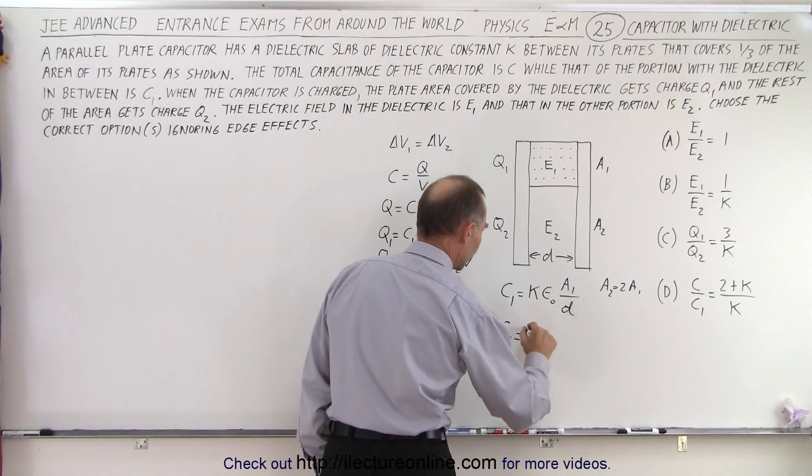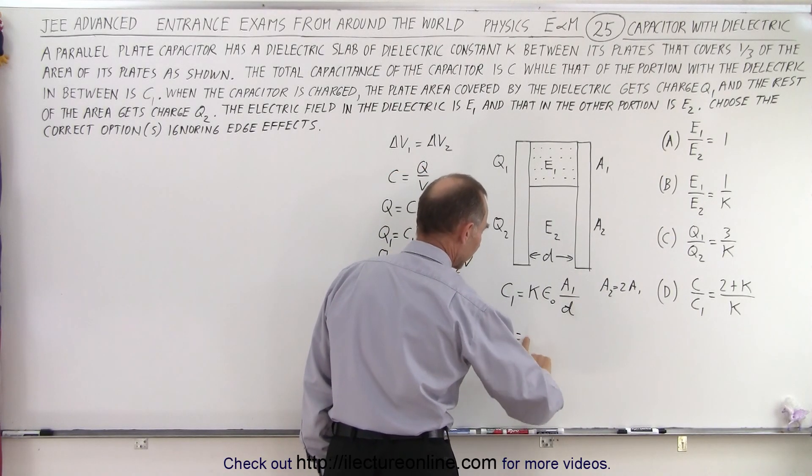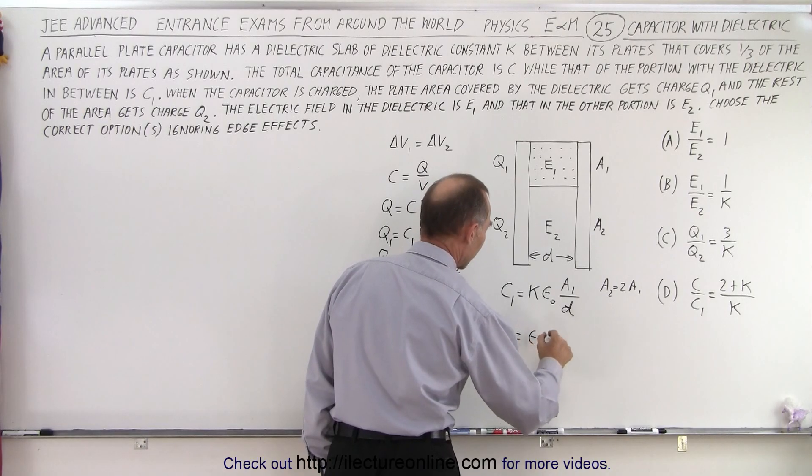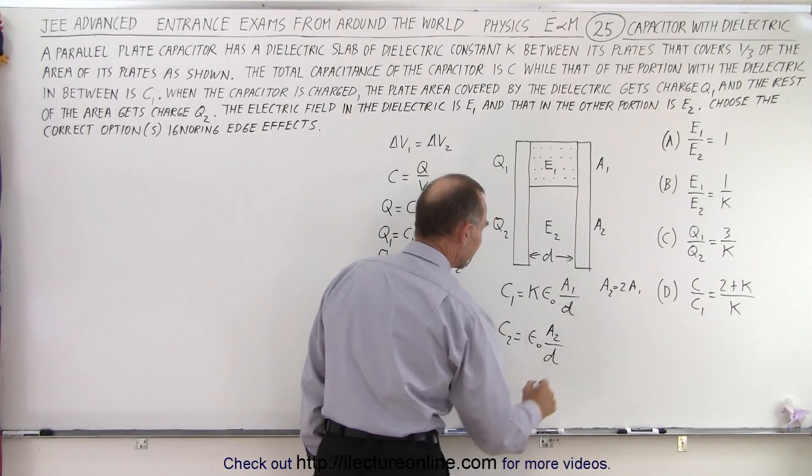And we know that C2 is equal to, it doesn't have a dielectric constant, so simply epsilon naught times A2 divided by D.